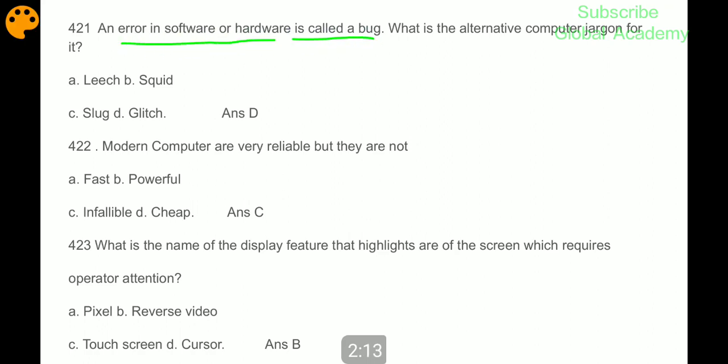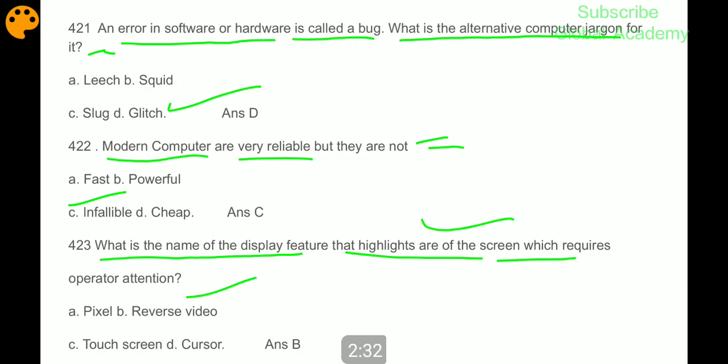An error in computer hardware is called a bug. What is the alternative computer jargon for it? Glitch. Modern computers are very reliable but they are not infallible. What is the name of the display feature that highlights area of the screen which requires operator attention?